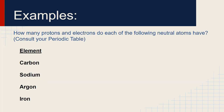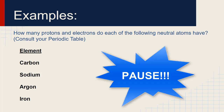Let's get a little bit of practice. Here are some elements — pause the video and go find a periodic table. You can look online at ptable.com, in your textbook, or the one you were given in class. Find these four elements: carbon, sodium, argon, and iron. Find how many protons and how many neutrons each has. Pause the video, write it down in your notes, and then come back and we'll see how you did.